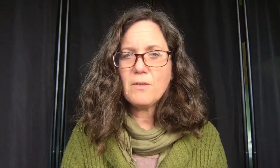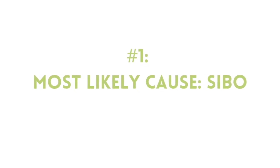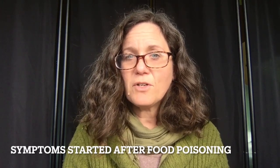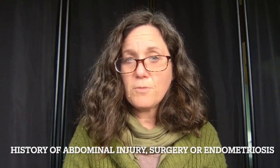The single most common underlying cause of IBS that we've determined with research is SIBO — small intestinal bacterial overgrowth. SIBO symptoms and IBS symptoms are very similar, but here are a couple of clues that might indicate you specifically have SIBO. Number one is if your digestive symptoms started soon after a case of food poisoning. The second clue would be if you have a history of abdominal surgeries, injuries, or endometriosis. So if you have that history along with bloating, constipation, or diarrhea, it's highly likely that you actually have SIBO.